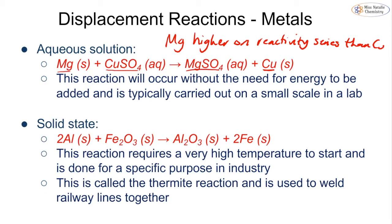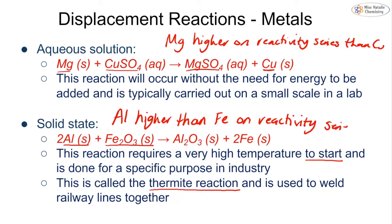If we have solid state reactions where our two reactants are solid like aluminium and iron oxide, this requires a lot of energy to be put in. This particular reaction is known as the thermite reaction. We heat it at very, very high temperatures to kick-start the reaction and then we get a displacement. Again, aluminium is higher than iron on the reactivity series, so it is more reactive and will take the place of iron. This reaction is used to weld railway lines together.